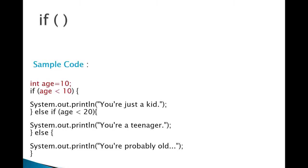So if age is less than 10, it will print 'you're just a kid'. Else if age is less than 20, it will print 'you're a teenager'. Else it will print 'you're probably old'. Look at this: why do you think the condition age is less than 10 comes before age is less than 20? Anyone want to answer?